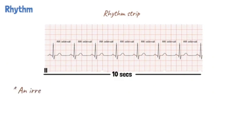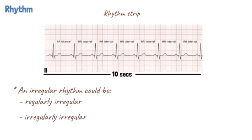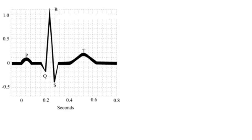If the rhythm is irregular, the next thing to be determined is if it is regularly irregular or irregularly irregular. An underlying regular rhythm can be made irregular by the presence of extra beats, also called ectopic beats. Once the regularity of the rhythm has been assessed, the QRS morphology should be inspected. The QRS complex is less than 120 ms, that is less than 3 small squares, in duration under normal circumstances.